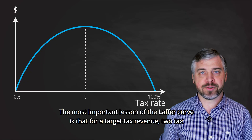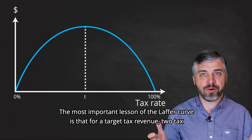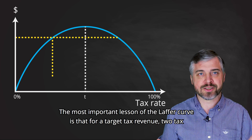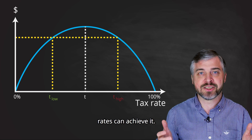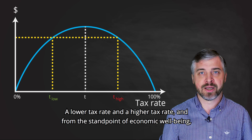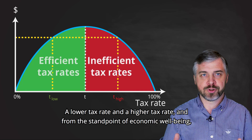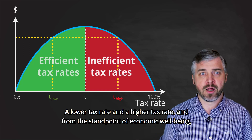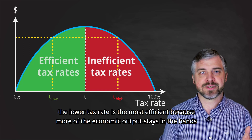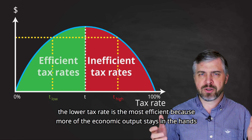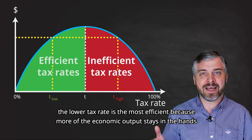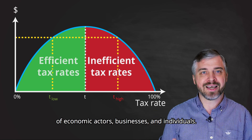The most important lesson of the Laffer Curve is that for a target tax revenue, two tax rates can achieve it — a lower tax rate and a higher tax rate. And from the standpoint of economic well-being, the lower tax rate is the most efficient because more of the economic output stays in the hands of economic actors,